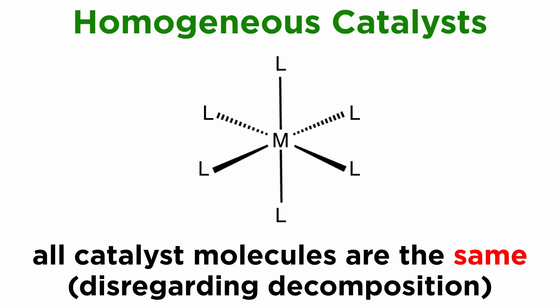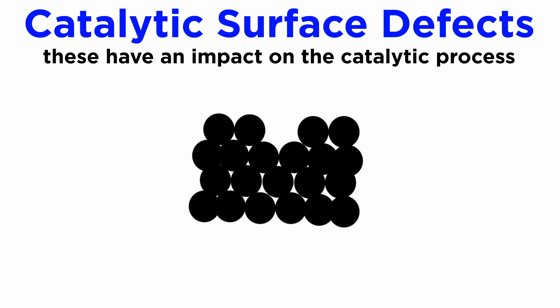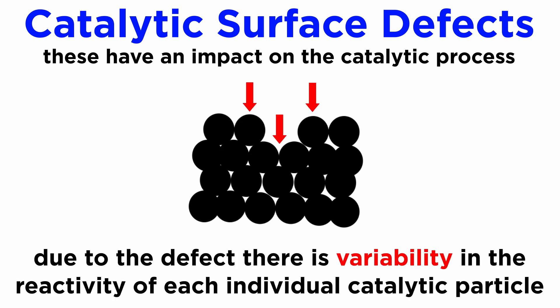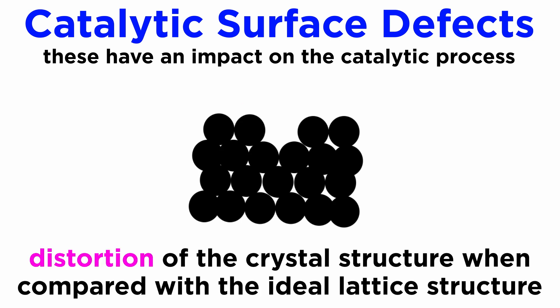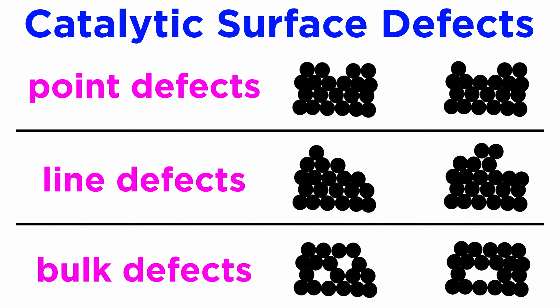One important difference between homogeneous and heterogeneous catalysis is the fact that in the former, all catalyst molecules — disregarding decomposition — are identical and all behave the same way, which makes reactions easier to characterize and reproduce. Surfaces, however, are not easy to construct reproducibly. Defects are common, and they actually make a very important contribution to catalysis. The formation of defects leads to variability in the reactivity of each single catalyst molecule or atom. A solid defect is defined as the distortion of the crystal structure versus the ideal lattice structure. Defect structures always form in solids, and can be subdivided into a variety of types.